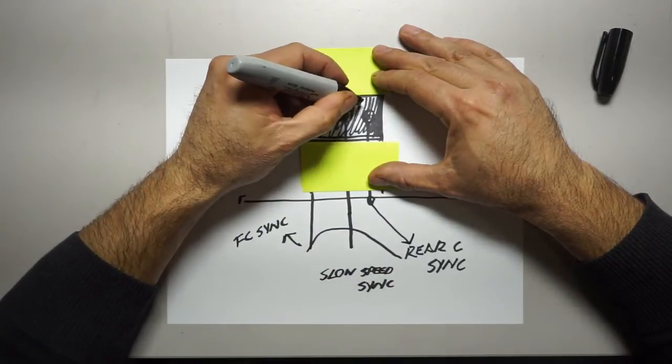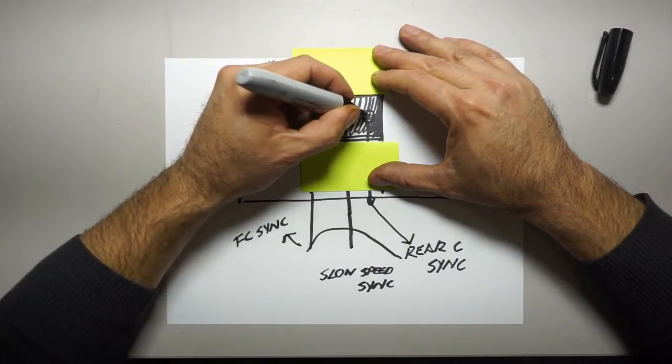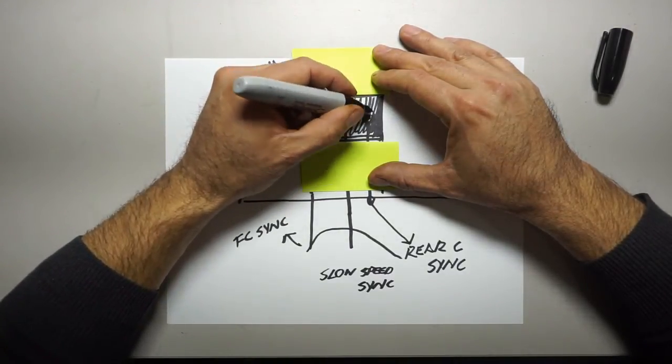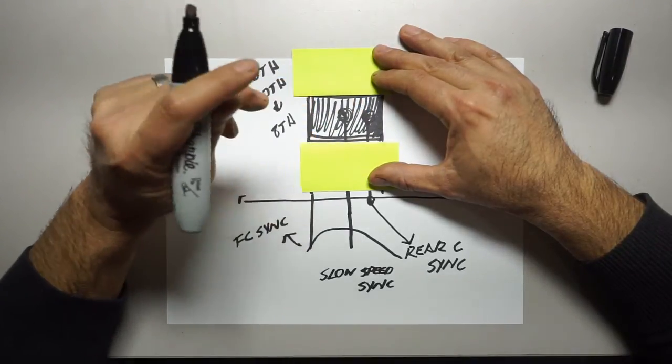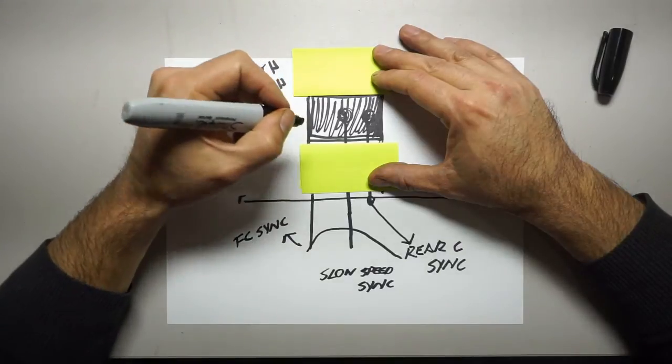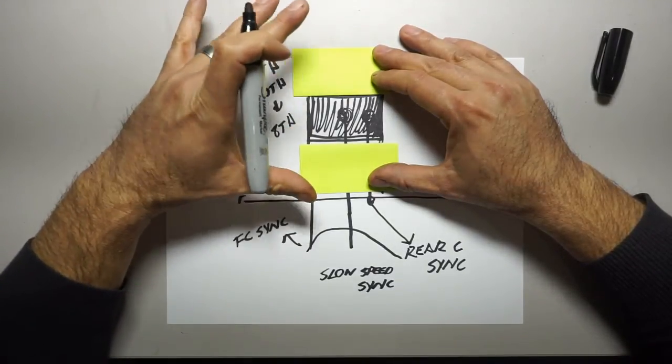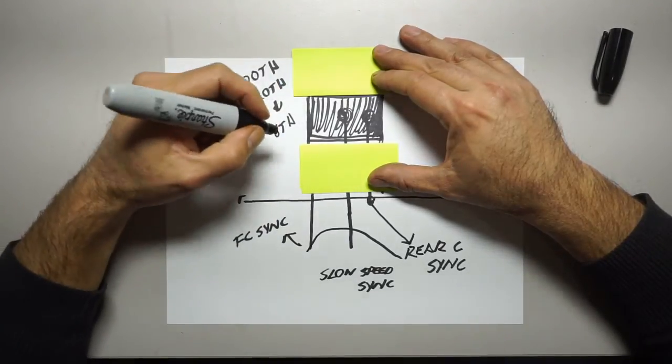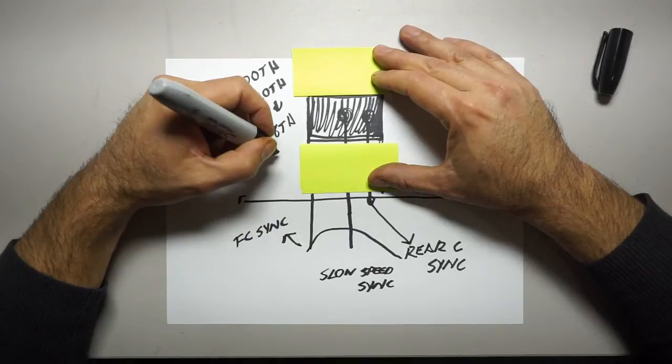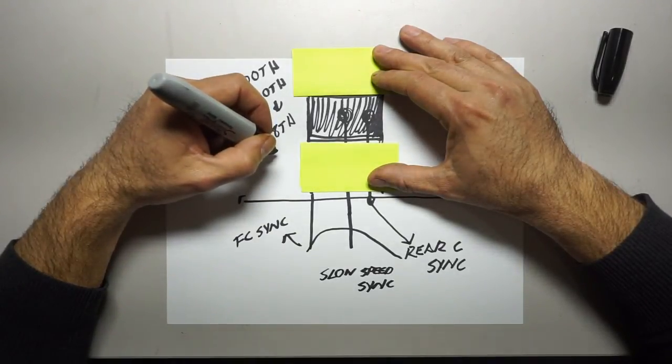So what this does is this allows a lot of blurry ambient light in. And then it freezes the motion of whatever that you're getting in your image and then allows some blurry light behind it. And it's also called dragging the shutter. And it creates really great lighting effects. But it only works below 1/8th and it really works very well at somewhere around 1/4 of a second or a second.